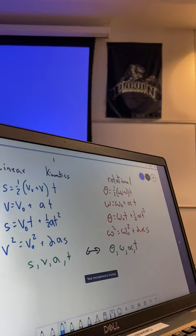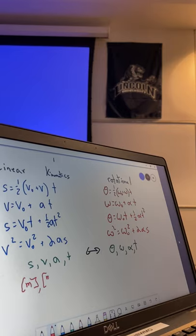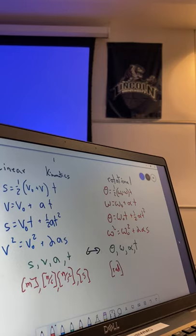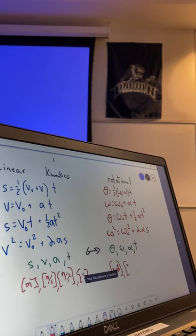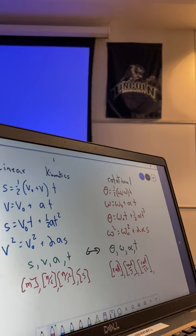I think it's a good exercise to look at in terms of our units. We have meters, meters per second, meters per second squared, and then obviously seconds. On this side, you will have radians, radians per second, radians per second squared, and seconds.